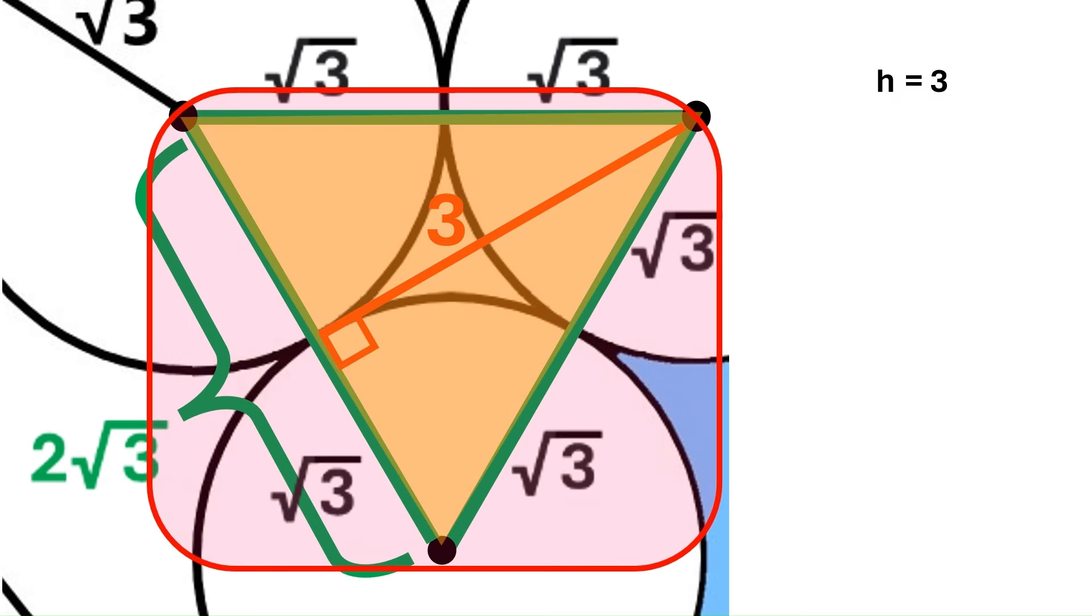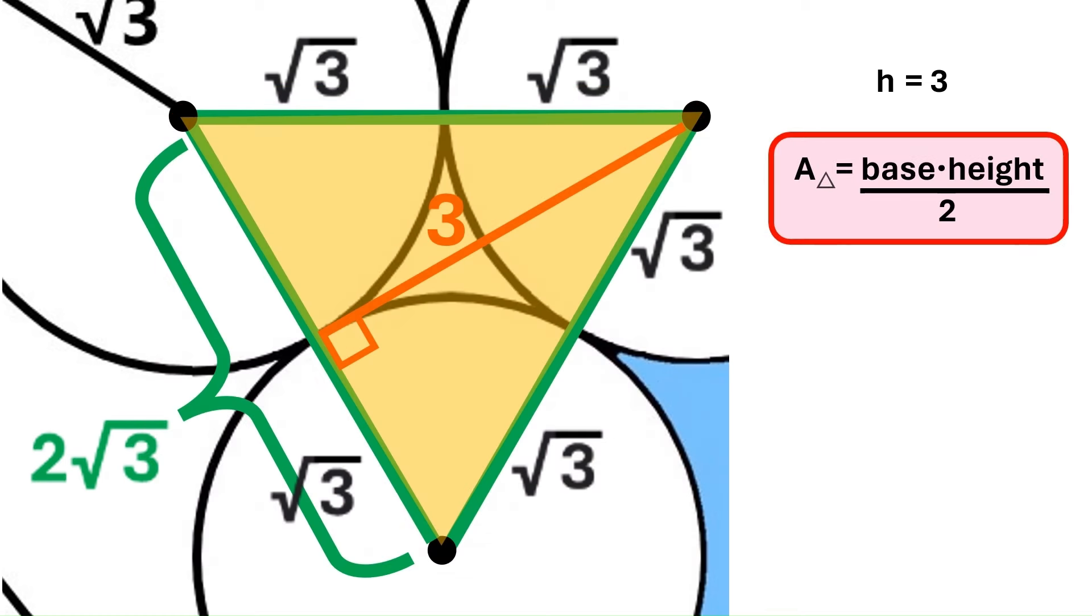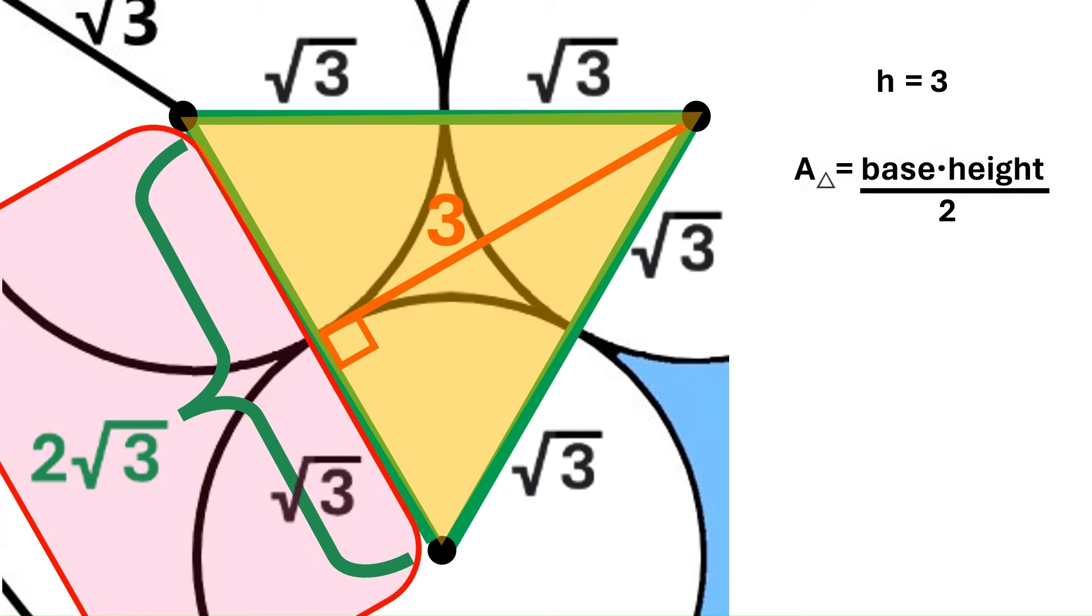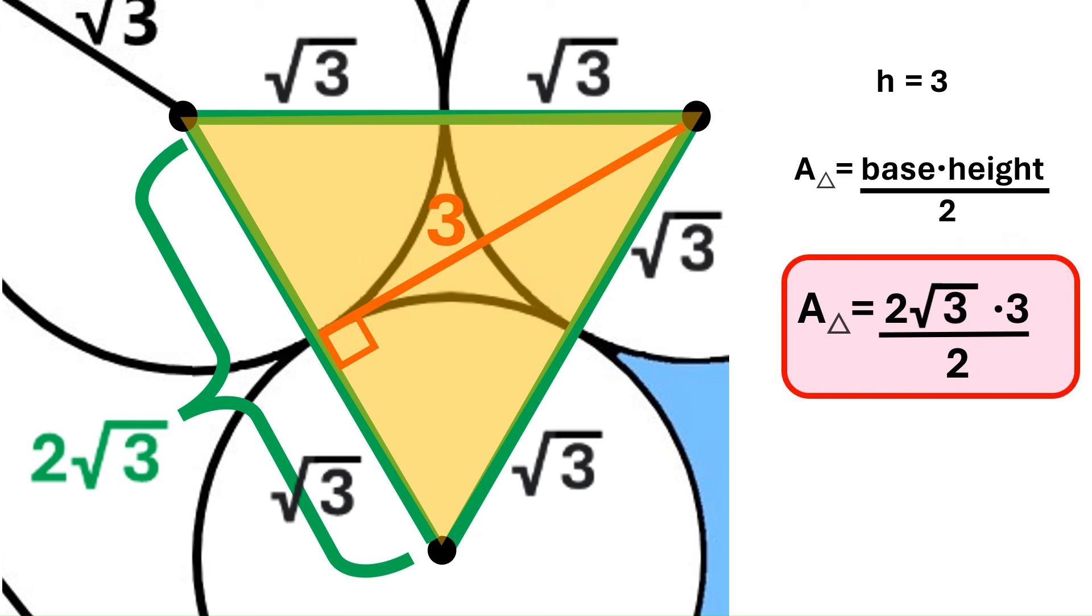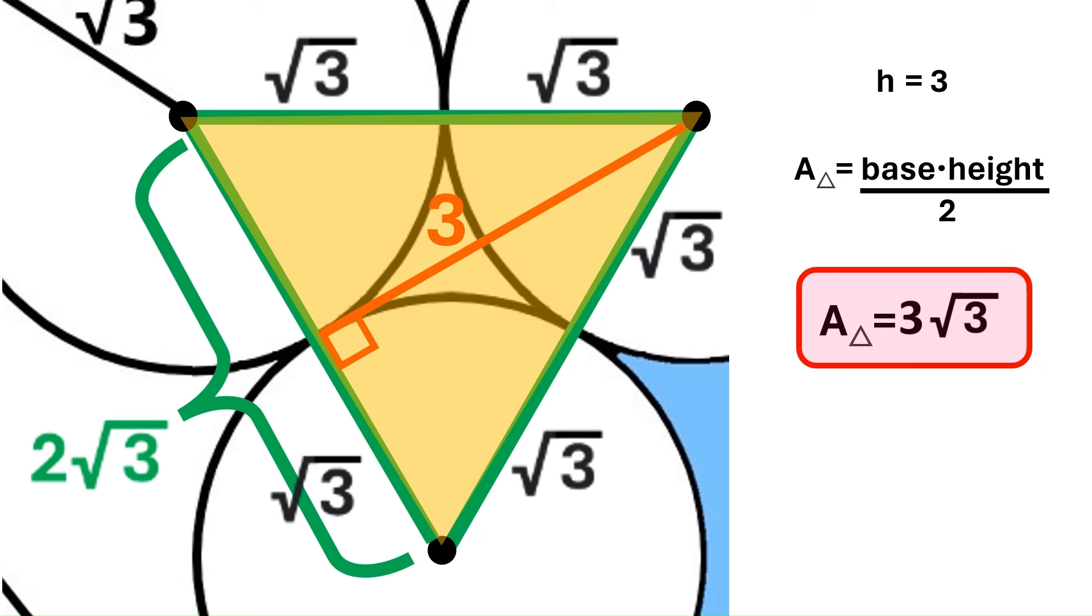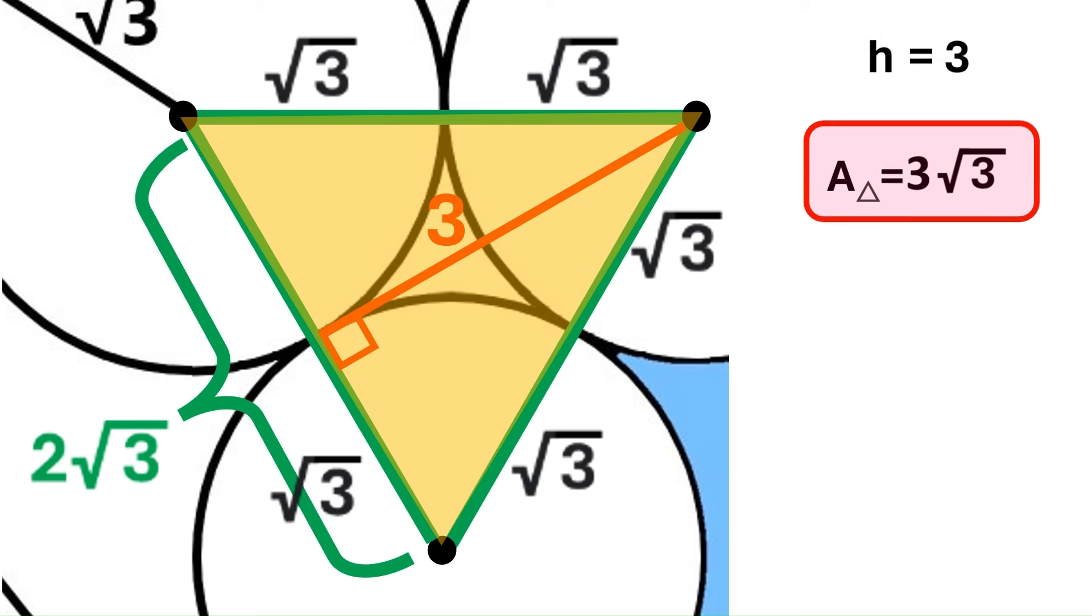Next, my son will help find the area of this equilateral triangle. Go ahead, son. Hello, people. The area of a triangle equals base times height divided by 2. The base of this triangle is 2 times radical 3, and the height is just 3. Let's substitute those numbers in the formula. The 2s cancel out and the area is 3 times radical 3. Thanks for the assistance, son. Let's also keep this finding over here.